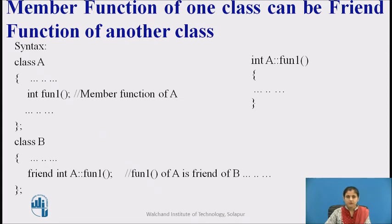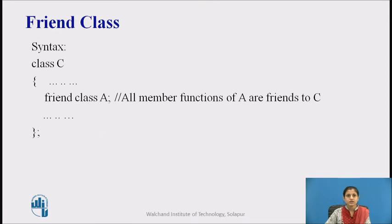A member function of one class can be a friend function of another class. In such cases, they are defined using the scope resolution operator. For example, function1 is a member of class A and it is a friend of class B. It is also possible for one class to be a friend of another class entirely. When this is the case, the friend class and all of its member functions have access to the private members defined within the other class.